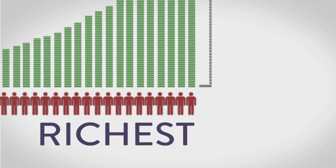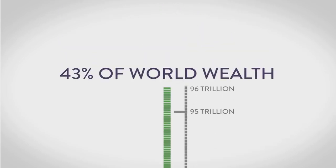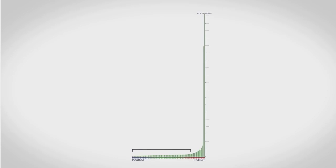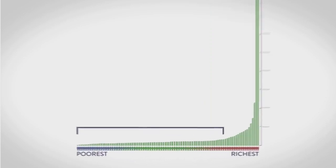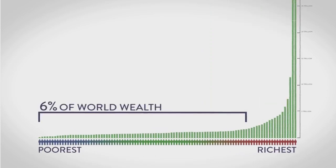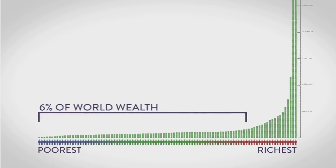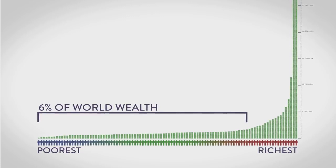While the richest 1% have accumulated 43% of our world's wealth. The bottom 80%, meanwhile, that's 8 out of every 10 people, have just 6% between them. But even this doesn't really show how extreme things have become.